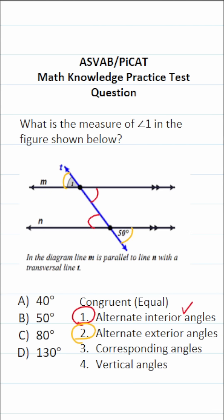Now let me give you an example of corresponding angles. Corresponding angles share the same side of a transversal. So this angle and this angle are considered corresponding angles — therefore, they're congruent.